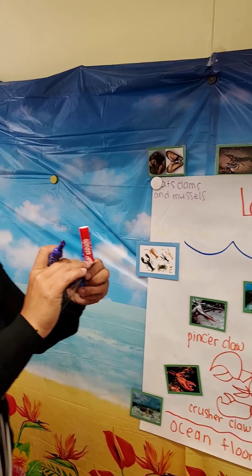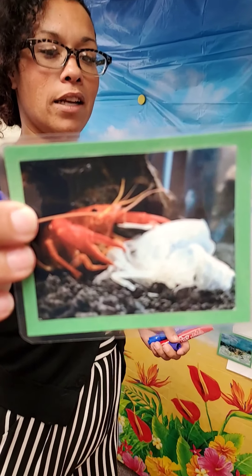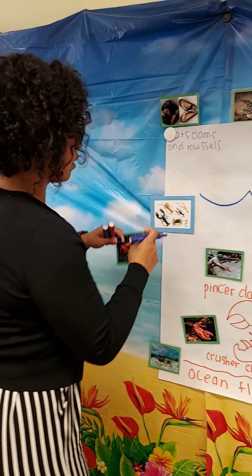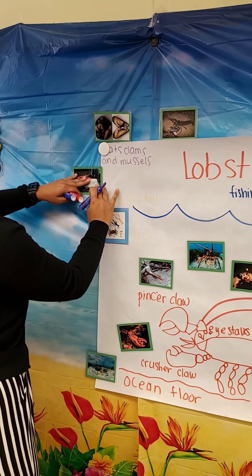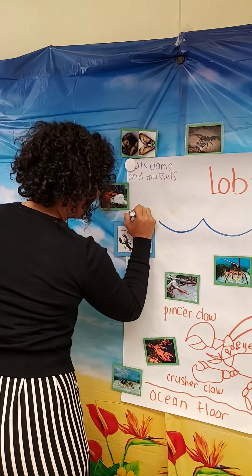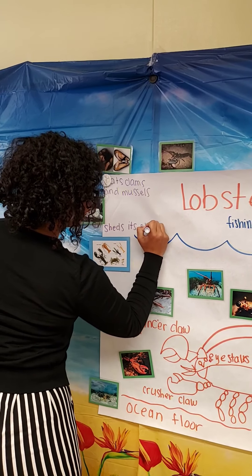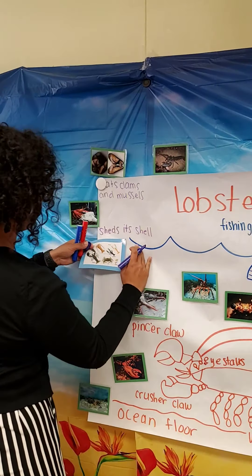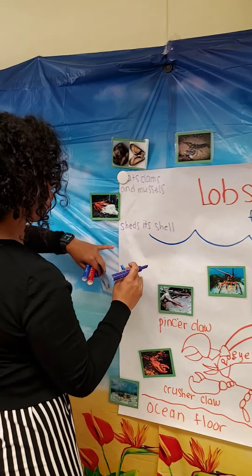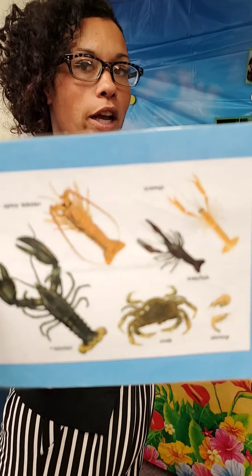They shed their shells. And the lobster is a crustacean, and a crustacean is something that lives in the ocean.